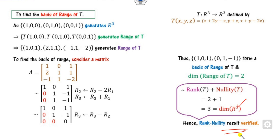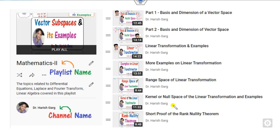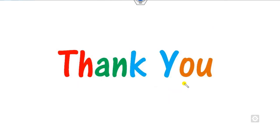This is how you can solve the Rank Nullity Theorem examples in a very simple manner. We will see some other lectures in the next videos. Till then, follow the playlist Mathematics 2, channel name Dr. Harishgar, where you can find topics on vector space, direct sum, proof of the Rank Nullity Theorem, range space, linear transformation, basis and dimension, and more. Best of luck, students!